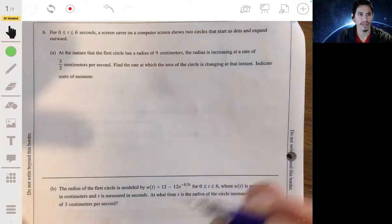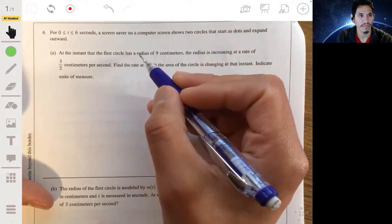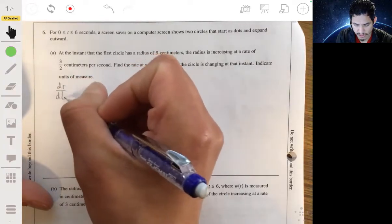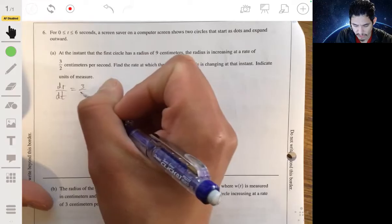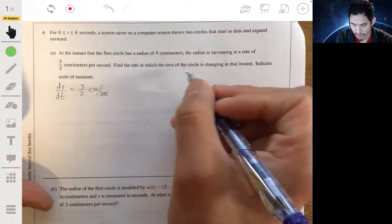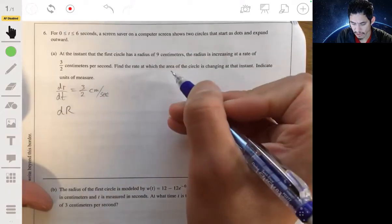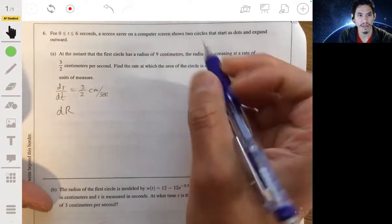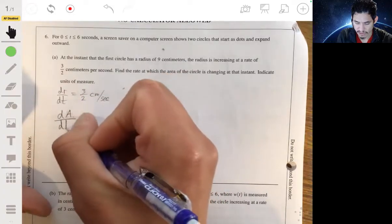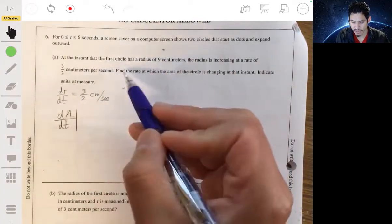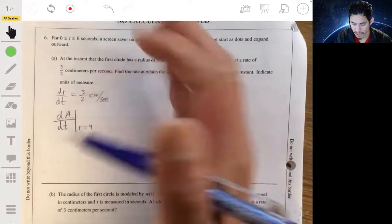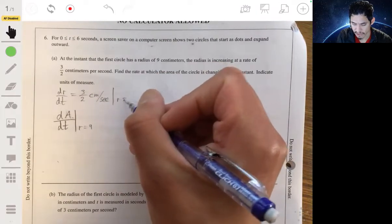Okay, so let's first write what we have. We have that the radius, so dr/dt, the radius is increasing at three halves centimeters per second. And we have to find the rate at which the area, so we want to find dA/dt, the rate at which the area is changing at that instant. So the rate at which the area is changing when r is nine, and this radius is changing at this rate also when r is nine.